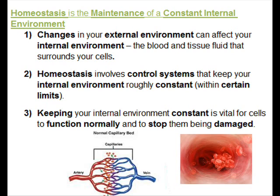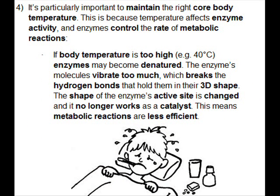Homeostasis involves control systems that keep your internal environment roughly constant within certain limits. Keeping your internal environment constant is vital for cells to function normally and to stop them being damaged. It's particularly important to maintain the right core body temperature, because temperature affects enzyme activity and enzymes control the rate of metabolic reactions.